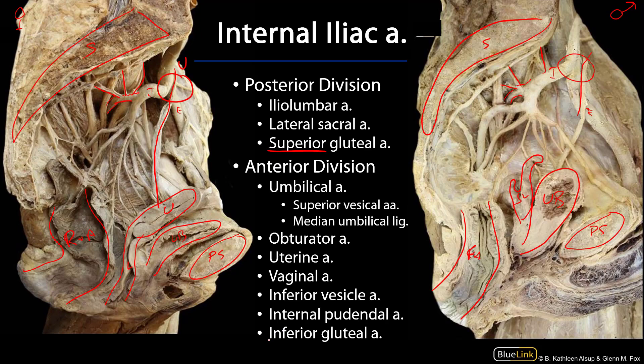There is also an inferior gluteal artery from the anterior division, and that's because that artery exits into the hip from the pelvis inferior to the piriformis muscle. The anterior division has many branches named for their targets, so if you can see where they're going, you can oftentimes get a positive ID for what they are.